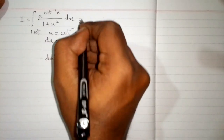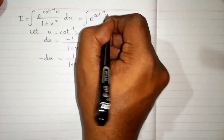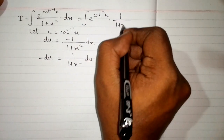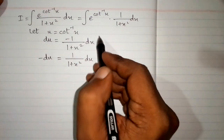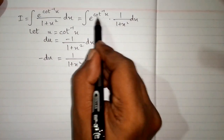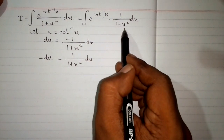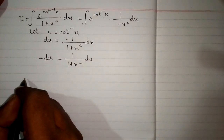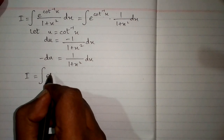Now suppose the above integral is I. The integral can be written as e to the power inverse cot of x, multiplied by 1 upon 1 plus x square dx. We will put u in place of inverse cot of x, and minus du in place of 1 upon 1 plus x square dx. So the integral I can be written as e to the power u, minus du.